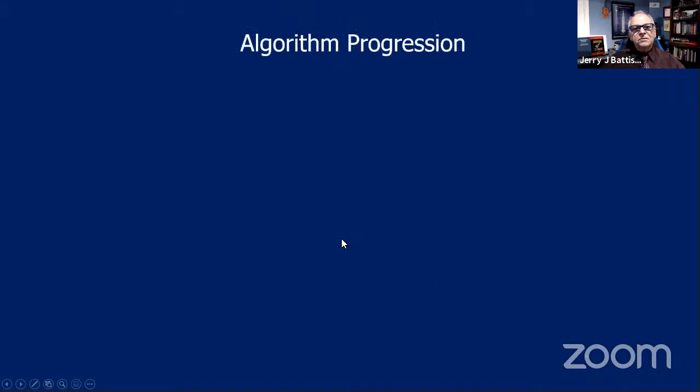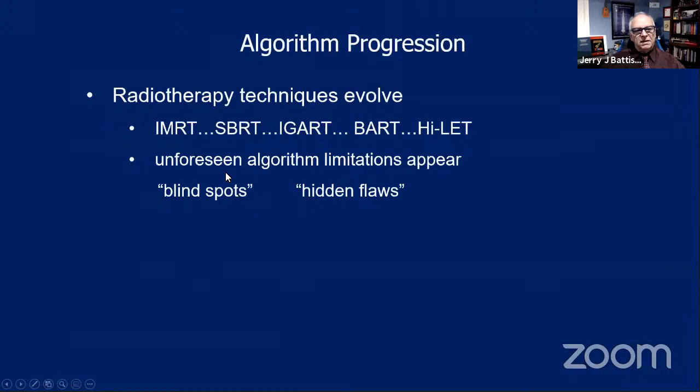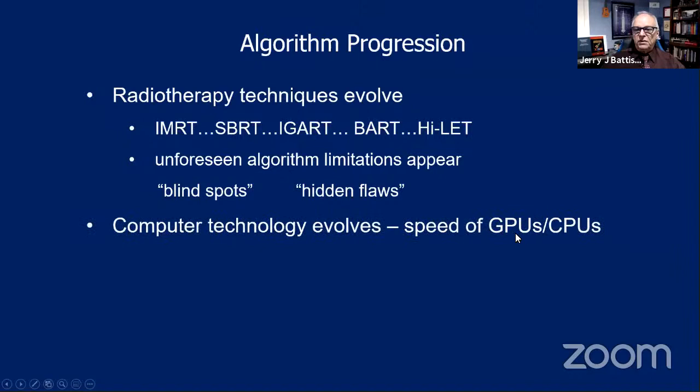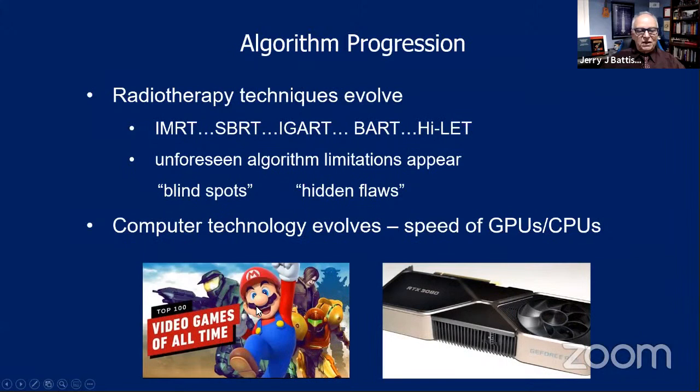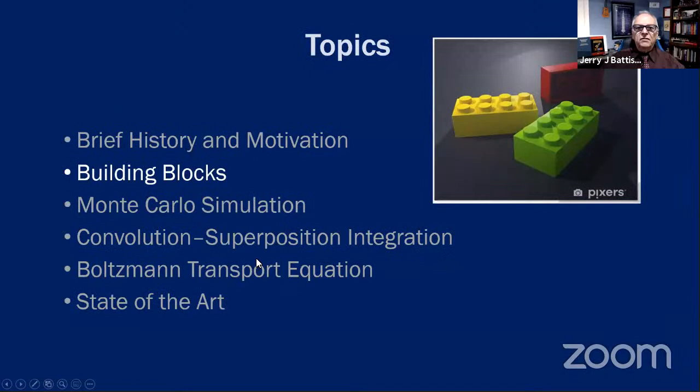Algorithm progressions have taken place because techniques have changed. It is important to look for unforeseen limitations, the blind spots, the hidden flaws in calculations. Computer technology has evolved with GPUs and CPUs — it is now possible to do calculations that once took weeks in less than a minute. Much of this came from video game technology, and modern GPUs are incredibly powerful machines.